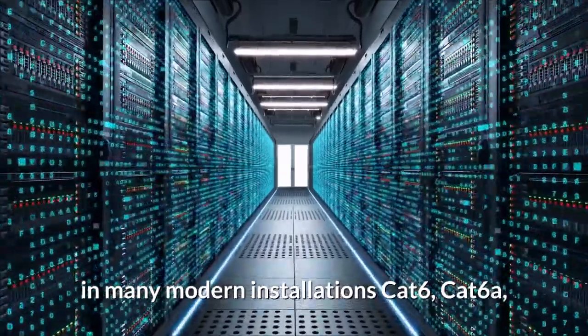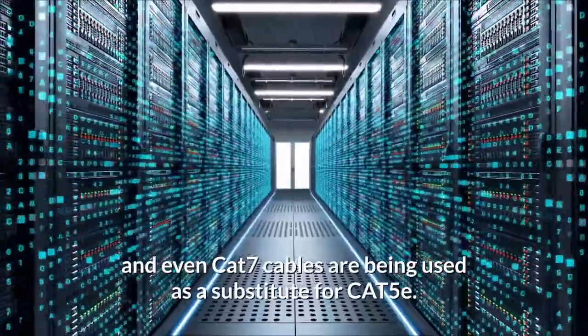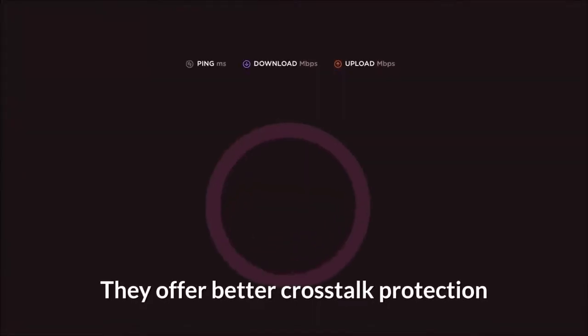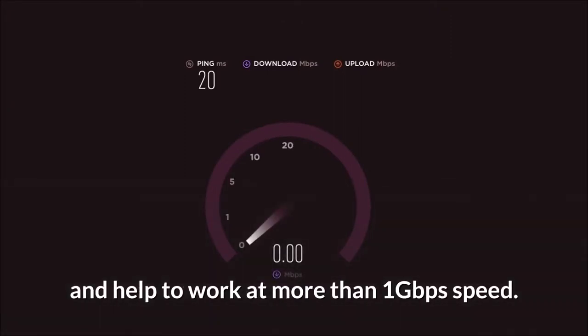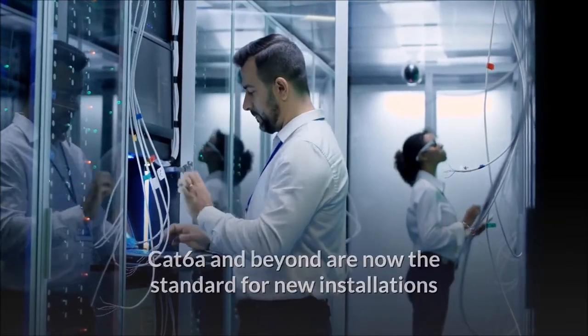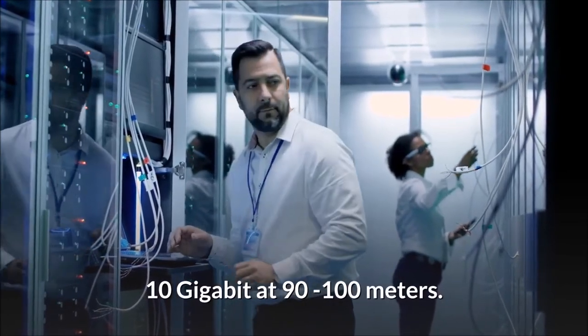However, in many modern installations Cat 6, Cat 6a, and even Cat 7 cables are being used as a substitute for Cat 5e. They offer better crosstalk protection and help to work at more than 1 Gigabit per second speed. Cat 6a and beyond are now the standard for new installations due to their ability to transmit 10 Gigabit at 90 to 100 meters.